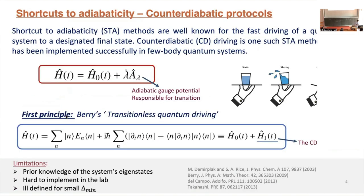There are various techniques for shortcuts to adiabaticity, and I'll talk about a particular concept called counterdiabatic driving, or the counterdiabatic protocol. The idea is that you have a fast-evolving Hamiltonian introducing non-adiabatic excitations, and you introduce an additional term that compensates for these excitations — suppressing transitions between eigenstates so you stay in the ground state. This concept was introduced almost two decades ago, in 2003, by Demirplak and Rice.